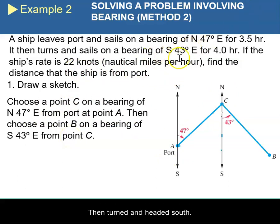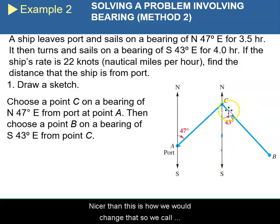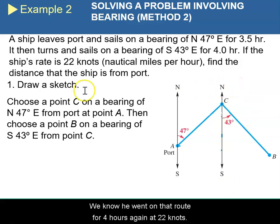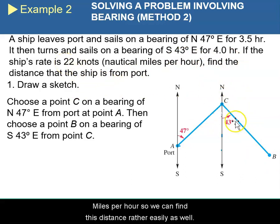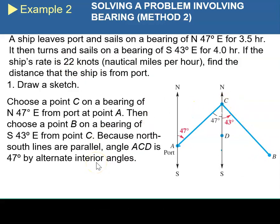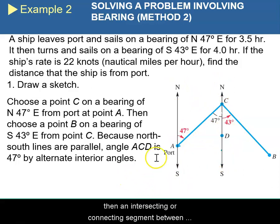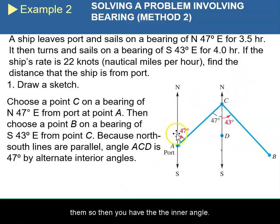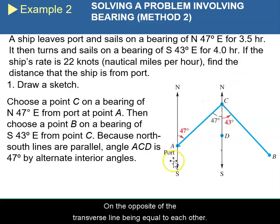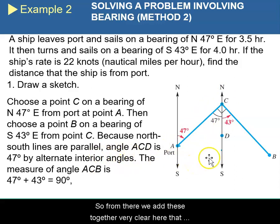Then we do the same thing from there. He then turned and headed south, but towards the east at 43 degrees. We draw our north-south line and from the south, 43 degrees towards the east. We know he went on that route for four hours at 22 knots. By the transversal lines, this angle and this angle have to be the same, because you have two parallel lines and then an intersecting segment between them — the inner angles on opposite sides of the transversal are equal.